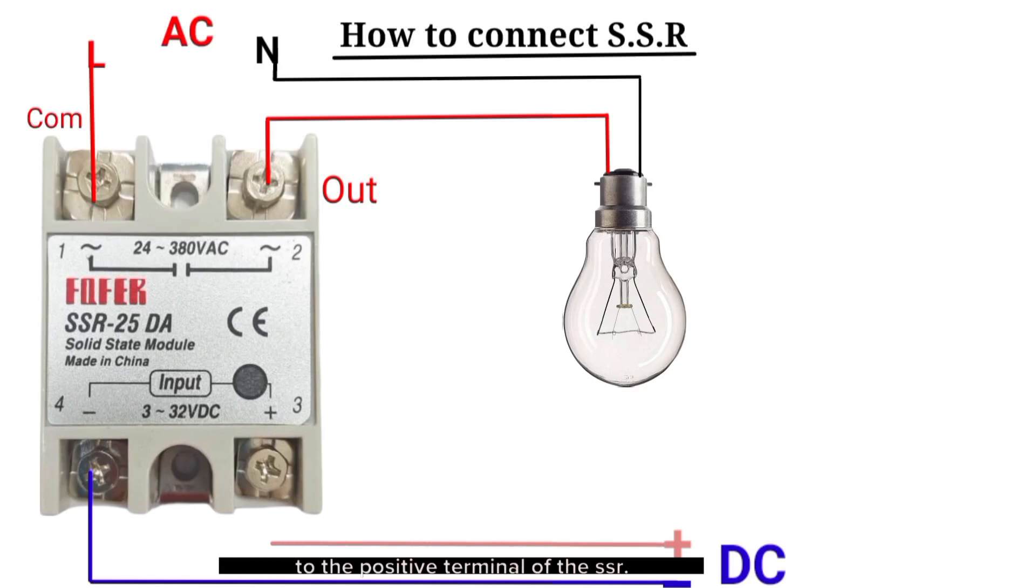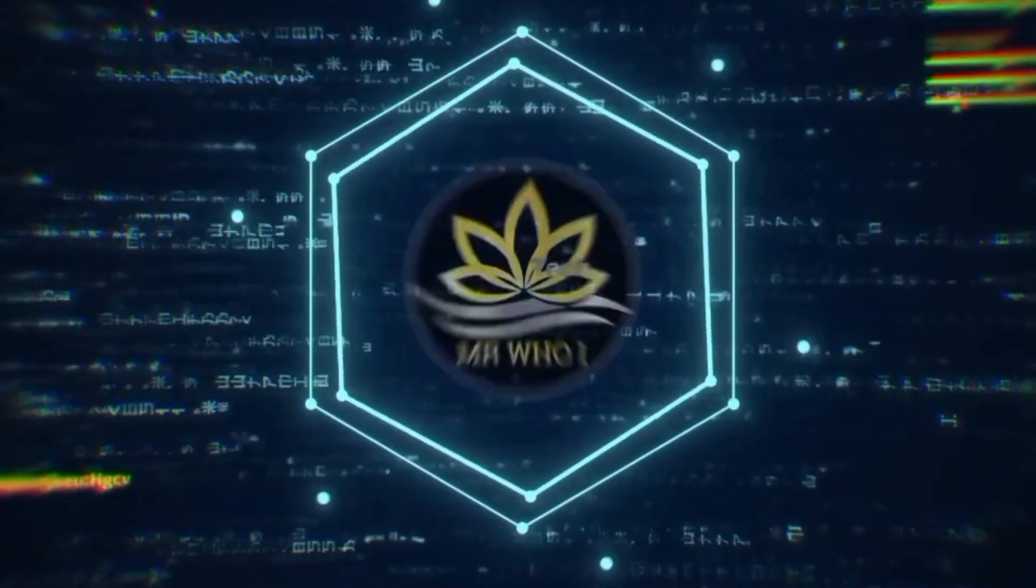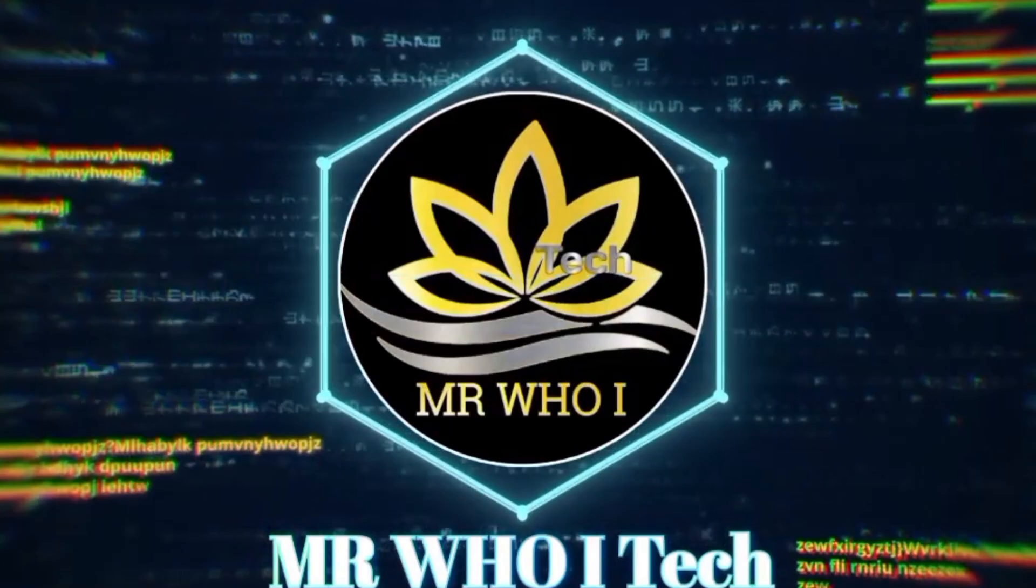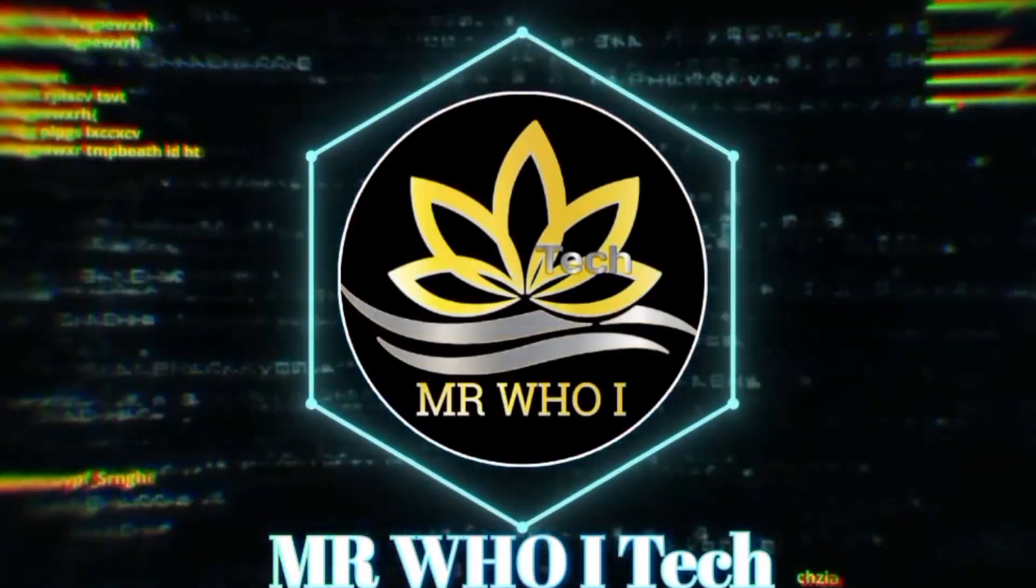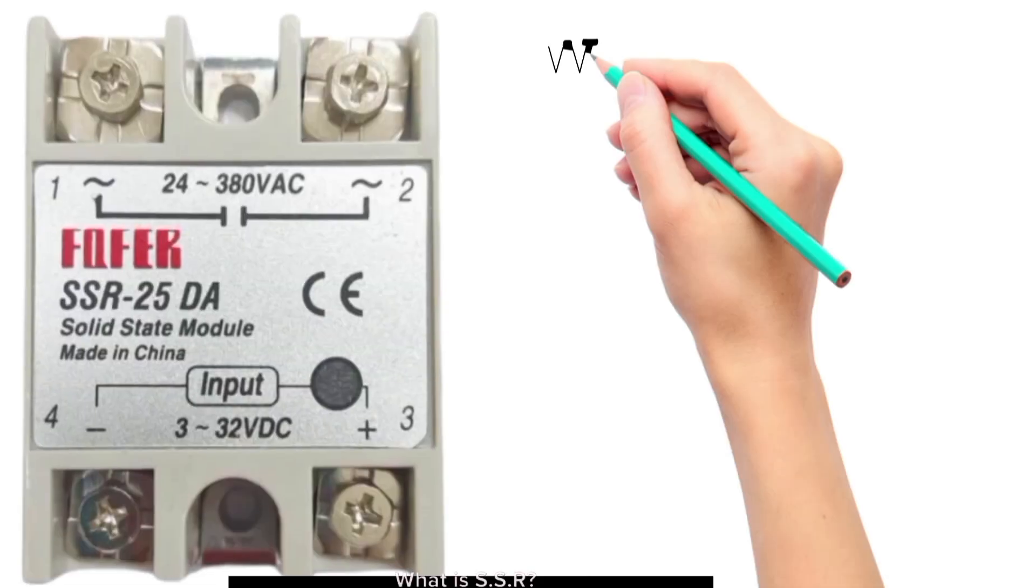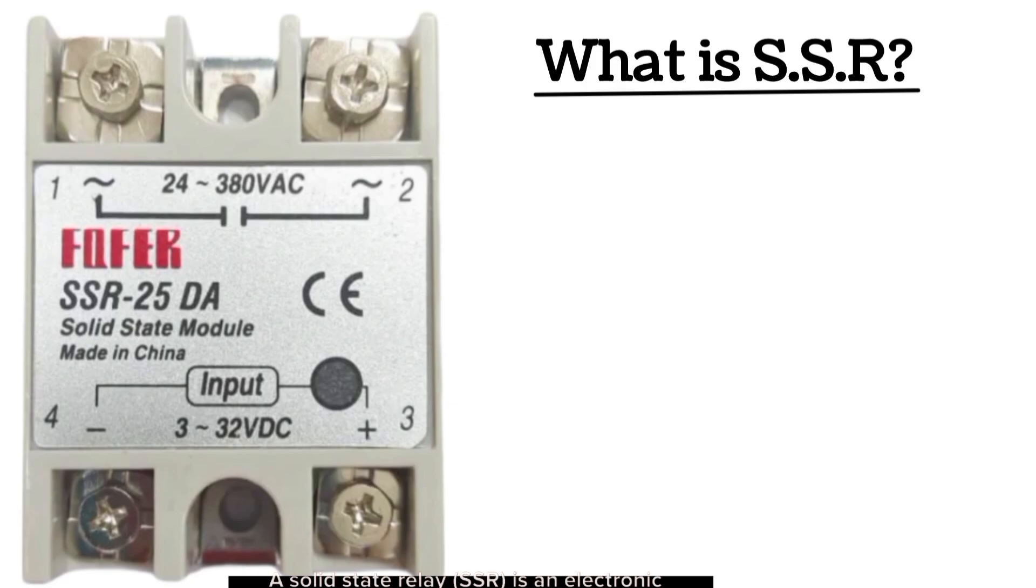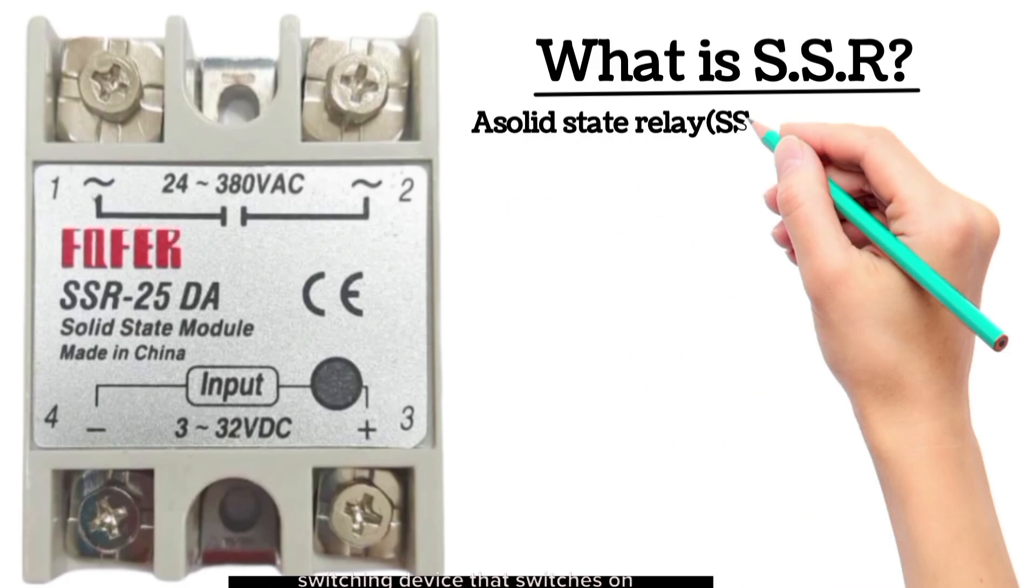The positive source will be connected to the positive terminal of the SSR. Boom, the SSR indicator light comes up and the bulb turns on instantly. What is SSR? A solid state relay (SSR) is an electronic switching device that switches on or off when an external voltage AC or DC is applied across its control terminals.